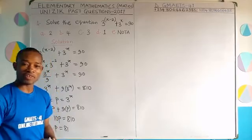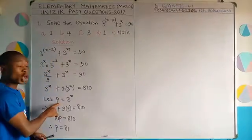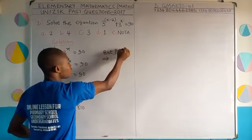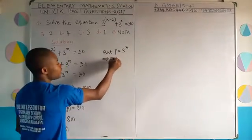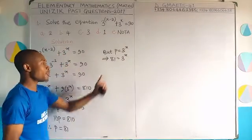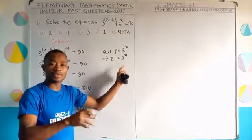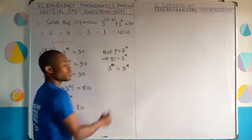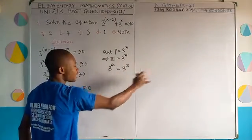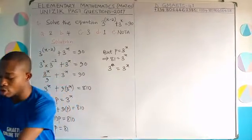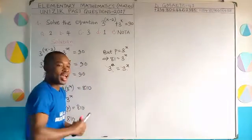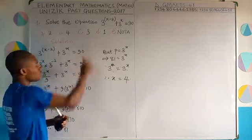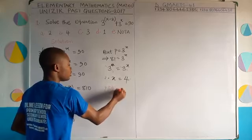It is not p we are looking for — it is x. Recalling that p equals 3^x, we have 81 equals 3^x. Expressing both sides in the same base: 81 is 3 to the power of 4, so 3^4 equals 3^x. Cancelling the same base on both sides gives x equals 4. The correct option is option B.